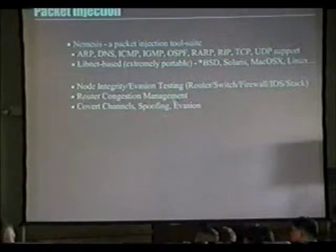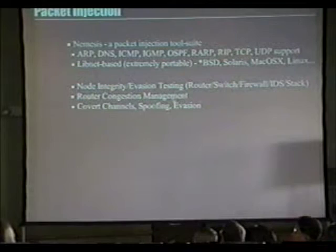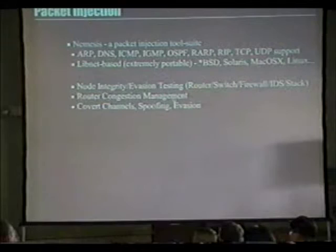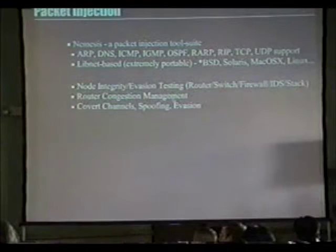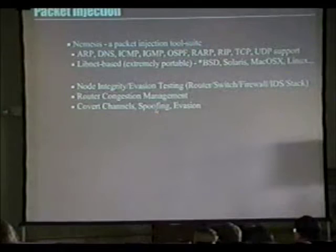Router congestion management is another good use — the tool is used for throwing gigabyte files across the wire as payload to test a particular protocol and see where the router chokes. It can also be used for covert channels. I actually did a demo where I sent a 35K text file through ARP, since nobody really looks at ARP payload in an IDS. I sent the Nemesis README across the wire, collected the packets on the other end — 100 ARP packets later, it made it through as a nice covert channel. And obviously it can be used for spoofing.